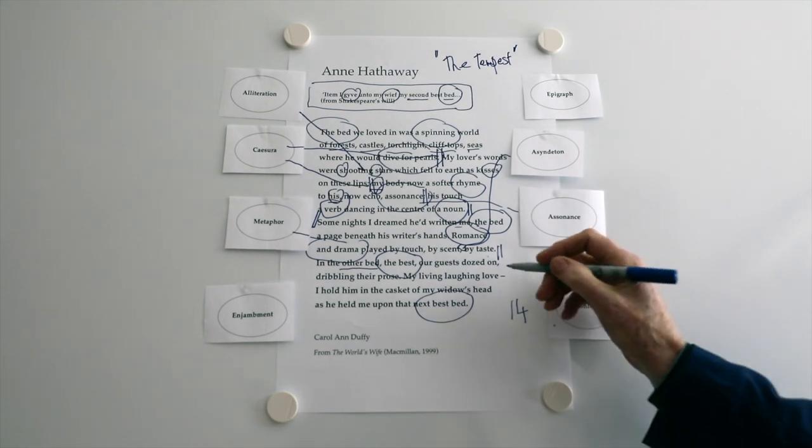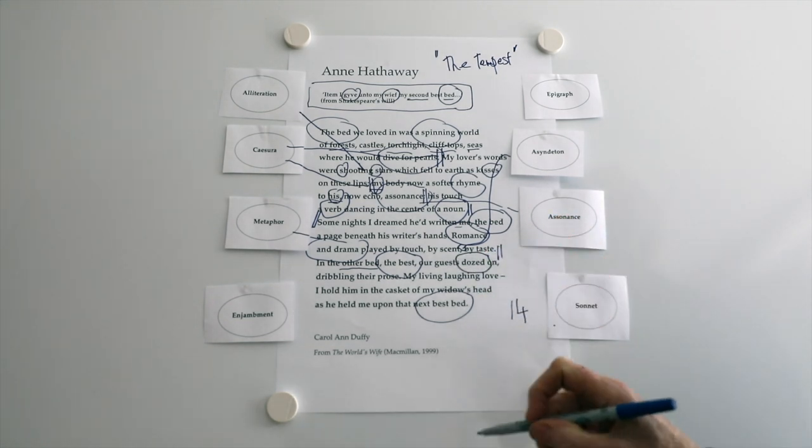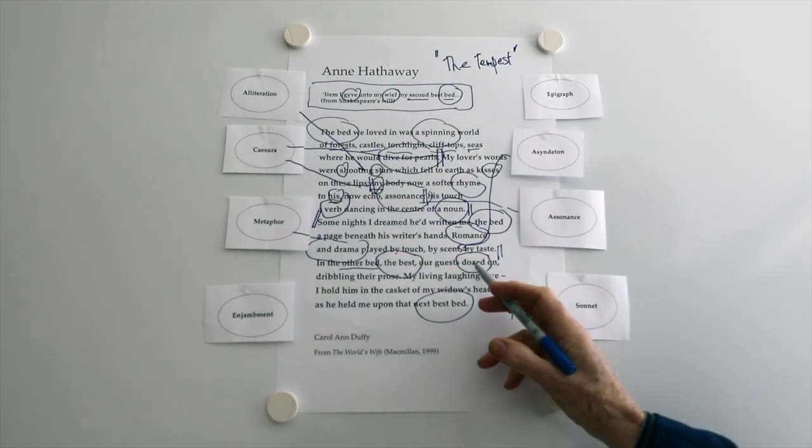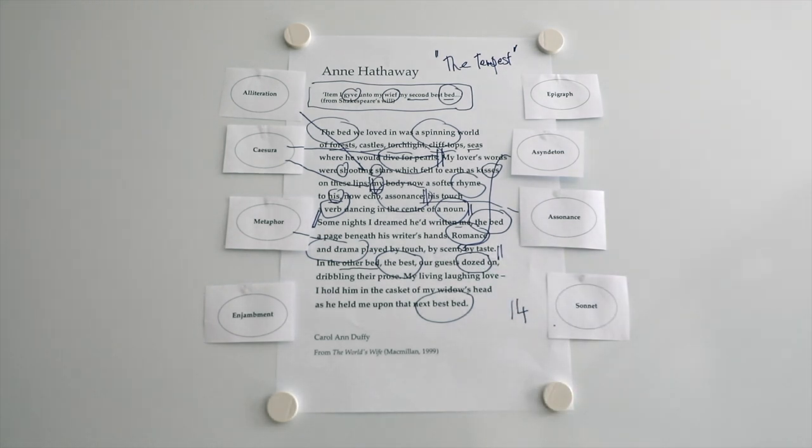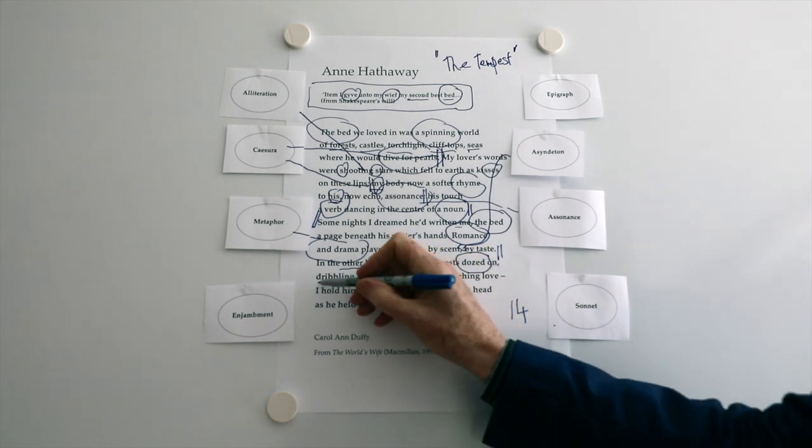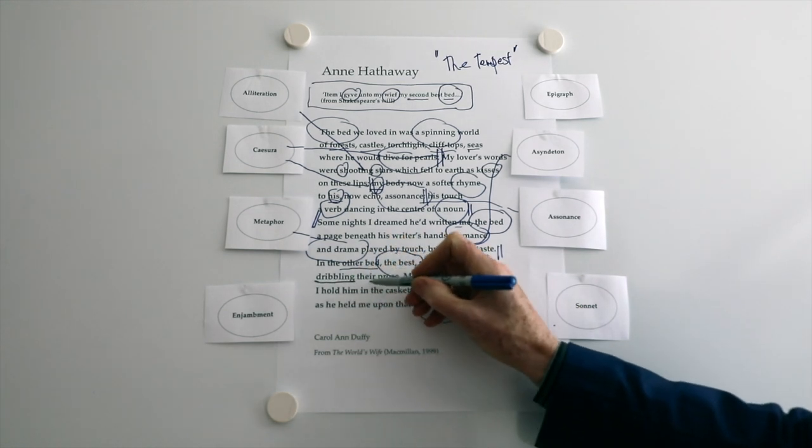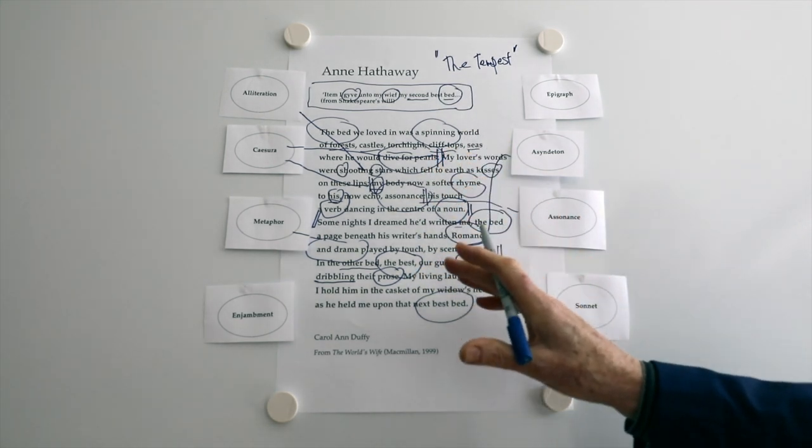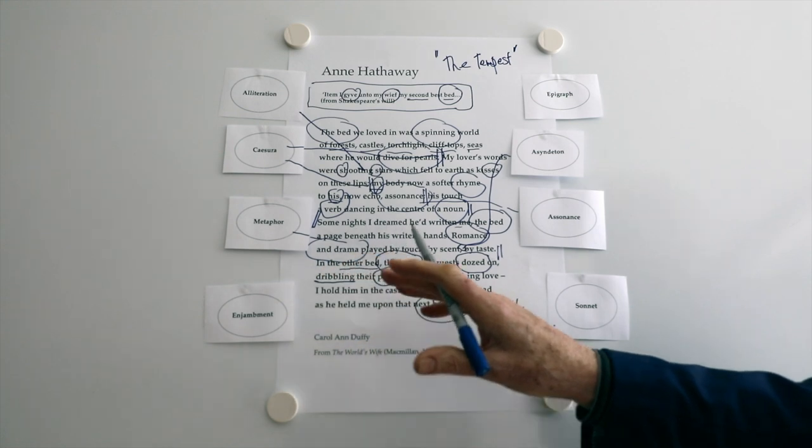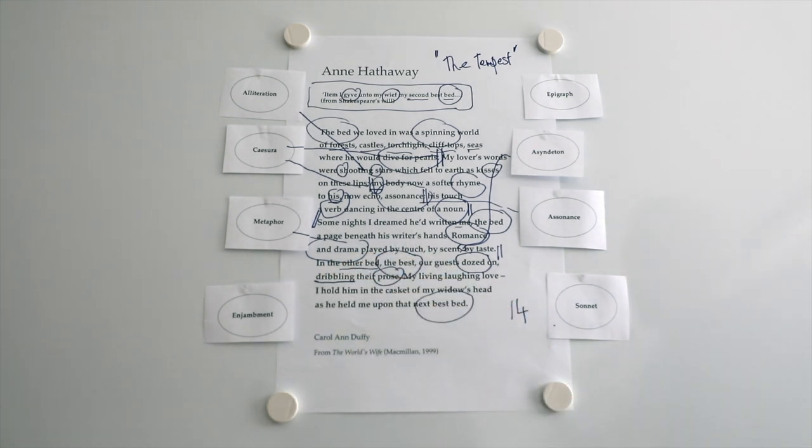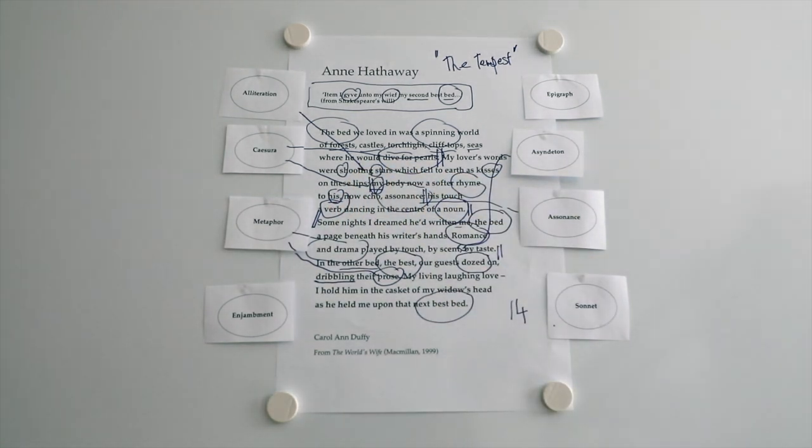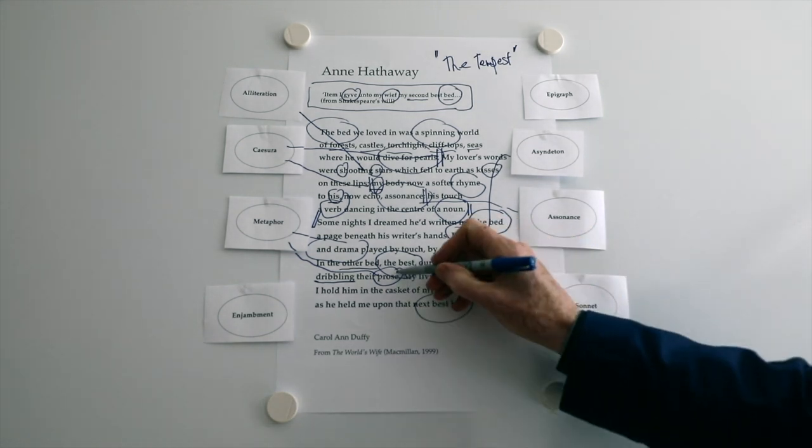It's the bed reserved for the guests. Now, look at how the language changes here. You've got dozed on. They're sleeping. But they're dozing. They're not experiencing all this. All the kisses and shooting stars. Dozing. What a rather sort of dull sort of word. Dozing. And then this is dribbling. Their prose. Now, we know what prose is. Different to poetry. He writes poetry. But here we get the guests in their sleep. It's almost as though the prose is coming out of their mouths. Another metaphor, really. But not a very pleasant sort of image, this. That word dribbling.